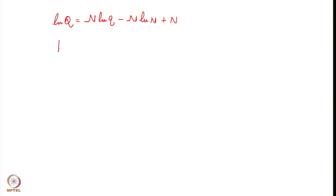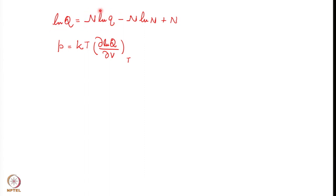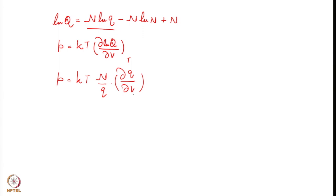We are interested in pressure: P = kT (∂ ln Q / ∂V) at constant temperature. Since we have an expression for log Q, we take the derivative with respect to volume. The terms N log N and N are constant, so their derivatives with respect to volume are zero. Therefore, pressure equals kT times (N/q)(∂q/∂V) at constant temperature.